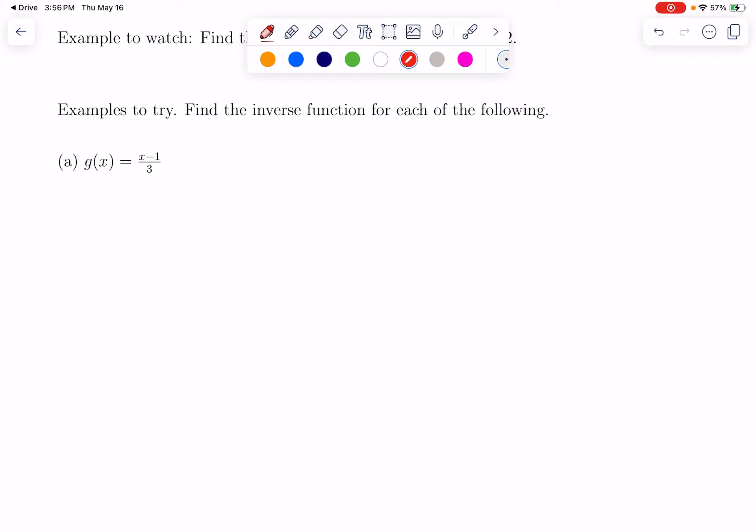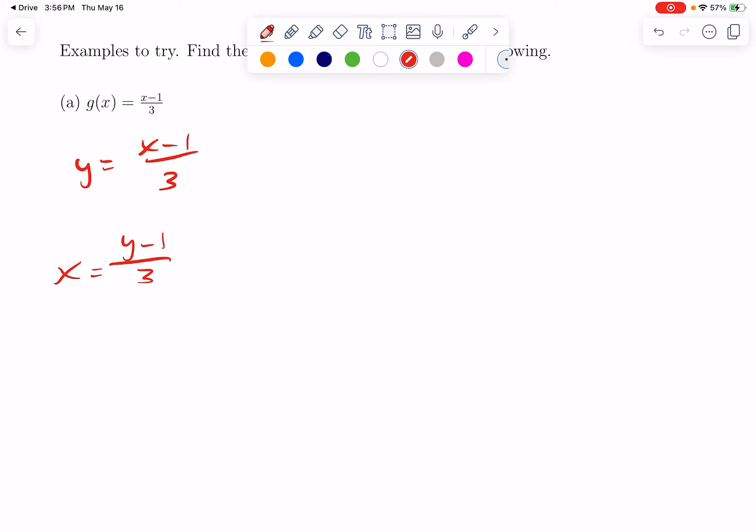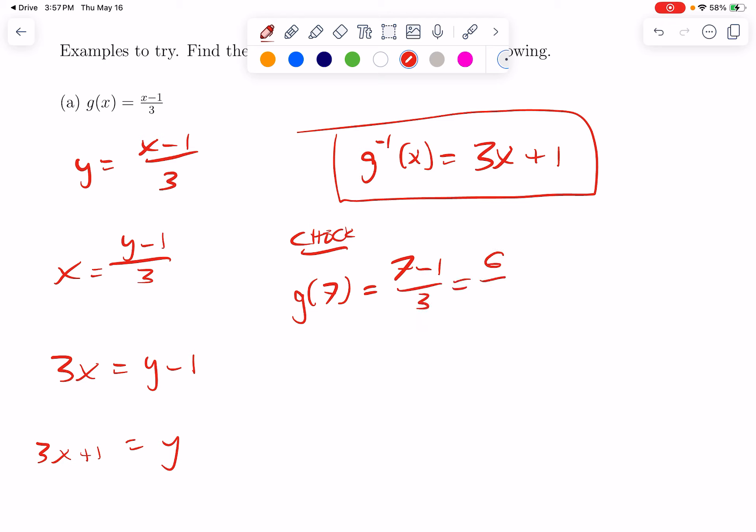Okay, I hope you have tried these. So, I write it with a y. And I switch the variables. So, now we solve for the new y. I'll multiply each side by three. So, three x equals y minus one. Which means y is three x plus one. So, our inverse function here seems to have as its formula three x plus one. And let's check. g of seven would be seven minus one over three. Which is six over three. Which is two. G inverse of two would be three times two plus one. Which is seven. So, one of these functions takes seven and turns it into two. One of them takes two and turns it into seven. Looks good.